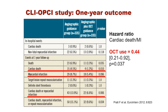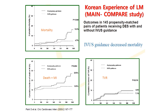The CLI-OPCI study is a randomized trial comparing angio-guidance and OCT guidance. In the composite endpoint of cardiac death and myocardial infarction, the hazard ratio was significantly reduced to 0.44 with OCT guidance. IVUS has shown stronger evidence for its efficacy in left main intervention. The MAIN-COMPARE study from Korea demonstrated that IVUS guidance decreased mortality.